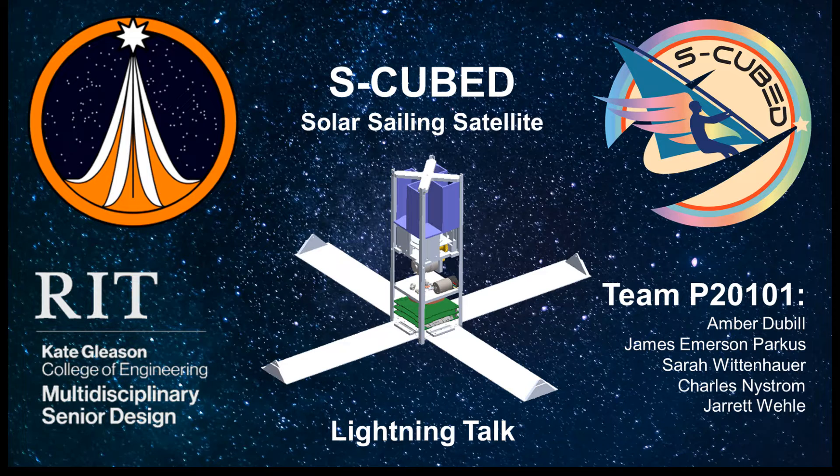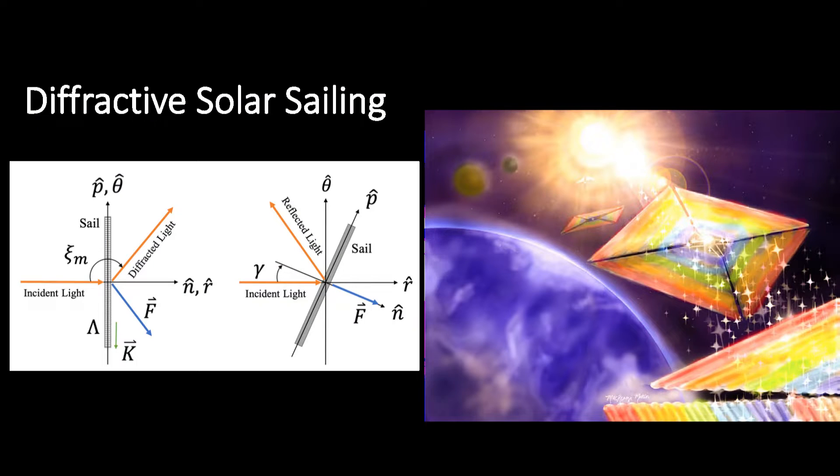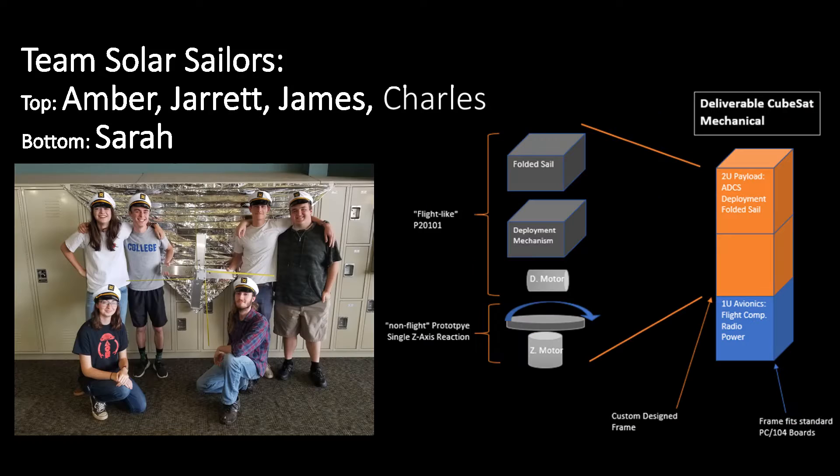Solar Sailing Satellite is a CubeSat that will test solar radiation pressure from diffractive elements for thrust. While the project started with previous teams, the current team made many improvements in the areas of deployment and attitude control.